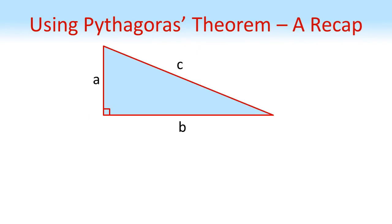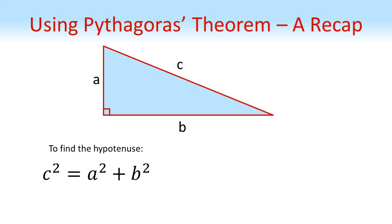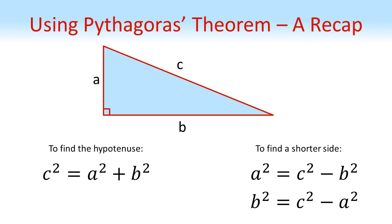So to recap, for any right-angled triangle with a hypotenuse of length C and shorter sides of length A and B: if we want to find a missing hypotenuse, we'll use the equation C squared equals A squared plus B squared. If it's one of the shorter sides we're after, we'll rearrange this so that either A squared equals C squared minus B squared, or B squared equals C squared minus A squared. Either way, a shorter side squared equals the square of the hypotenuse minus the square of the other shorter side.